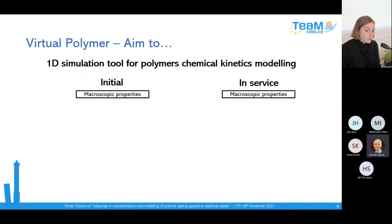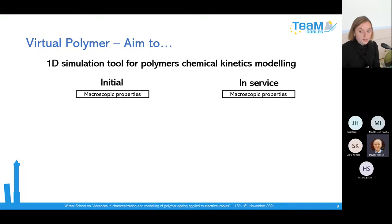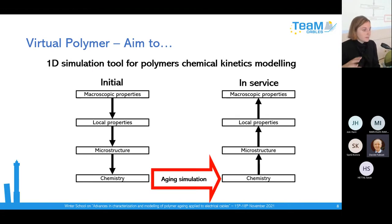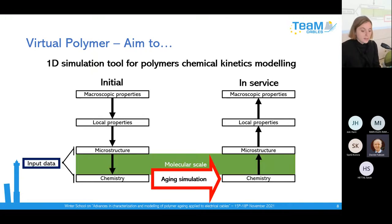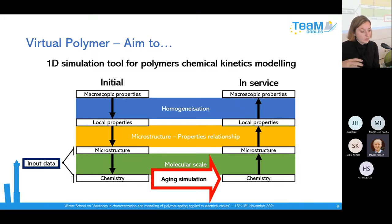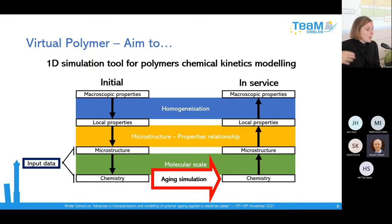This numerical tool aims to model degradation. Most of the time you have the initial state with macroscopic properties, and if you are lucky you could have aged cables to characterize macroscopic properties. Virtual polymers aims to bridge these two states — from macroscopic to molecular properties and from initial to aged states. It also provides extra bridges between microstructure and chemistry, between local properties and microstructure, and if needed, homogenization for thickness.